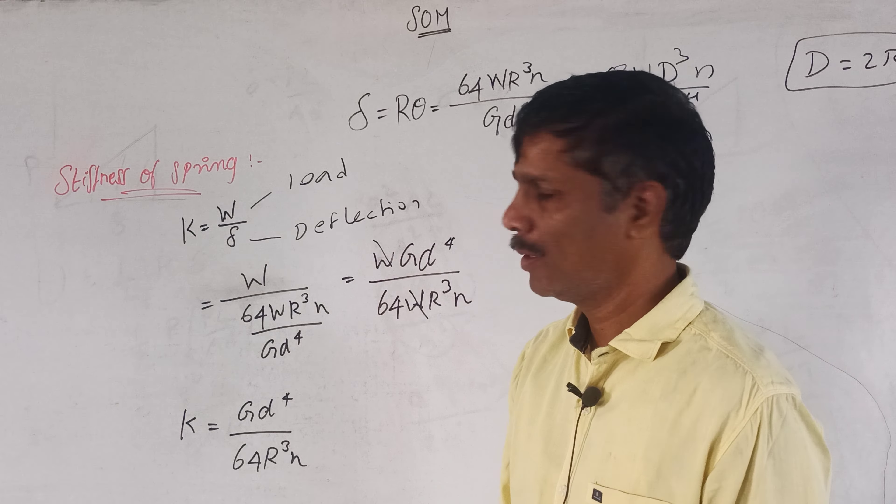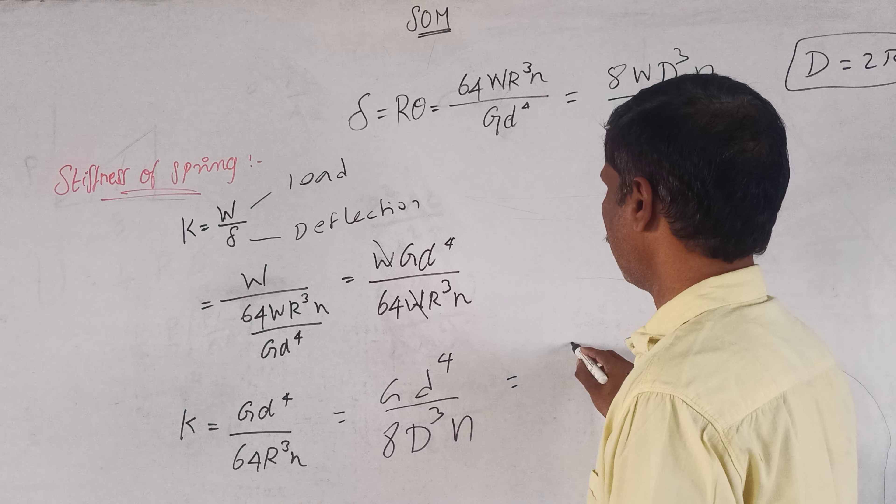This is G. Now I am going to show you the deflection. This is the deflection. This is the load for unit deflection. This is the load and the deflection. The load per unit deflection is the stiffness.